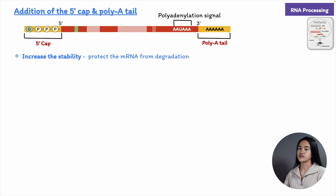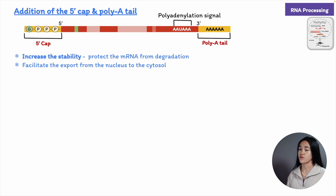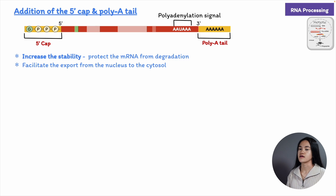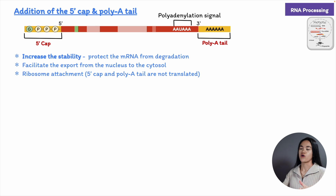These two modifications — capping and polyadenylation — have several key functions. First, they increase the stability of an mRNA molecule and help protect it from degradation by hydrolytic enzymes. Second, they facilitate export from the nucleus to the cytosol and mark the RNA molecule as an mRNA. Third, they are used by the protein synthesis machinery — ribosomes attach to the 5' end of the mRNA once it reaches the cytoplasm.